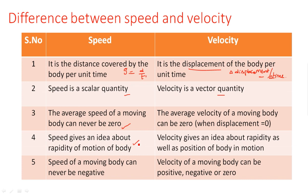Speed gives an idea about the rapidity of motion of a body. Velocity gives an idea about rapidity as well as the position of the body in motion — it deals with both the speed at which the body is moving and its position. In the case of speed, we only consider rapidity.